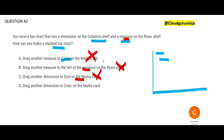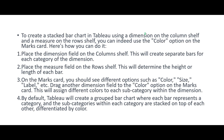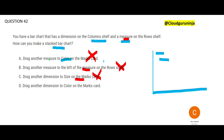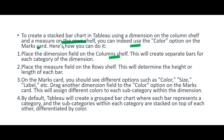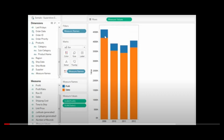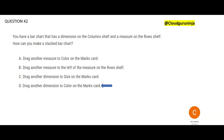That leaves us with D: add the dimension to the color on the marks card. This is exactly what will work. You create a stacked bar in Tableau by having a dimension on the column shelf, a measure on the row shelf, and using the color option on the marks card with a dimension — not a measure. Option A was wrong because it used a measure; you have to use a dimension. Tableau by default will create a grouped bar chart where each bar represents a category and subcategories within each category are stacked on top of each other, differentiated by color. This would be our final answer.